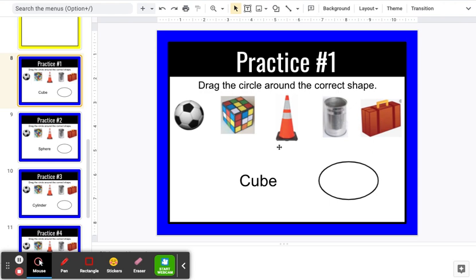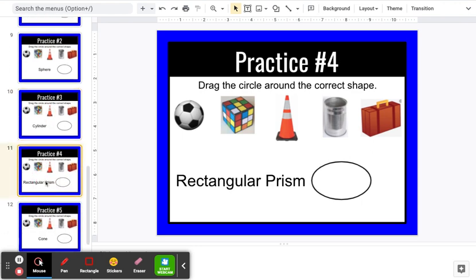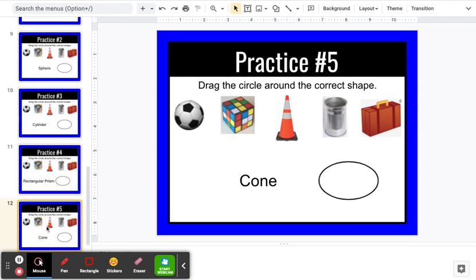And there are five names for these different kinds of 3D shapes. There's a cube, a sphere, a cylinder, a rectangular prism, and a cone.